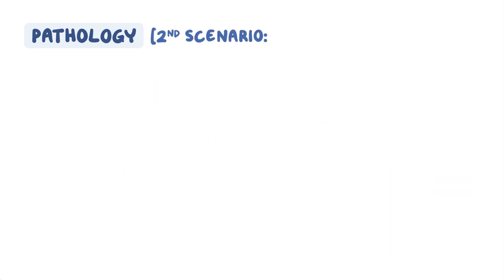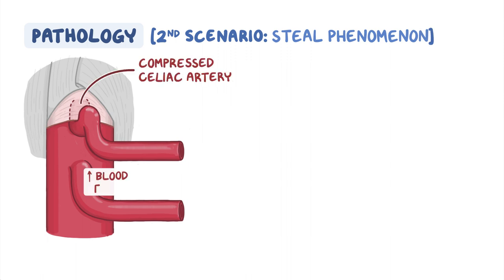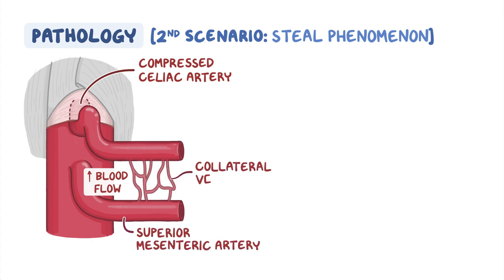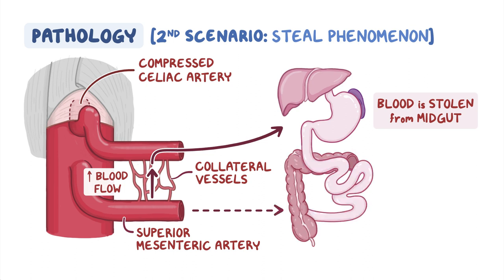The second scenario is called the steal phenomenon, where the celiac artery gets compressed, causing increased blood flow from a nearby artery like the superior mesenteric artery to get diverted via tiny collateral vessels to the celiac artery region. As a result, blood is stolen from the mid-gut area supplied by the superior mesenteric artery, resulting in insufficient blood flow to the bowel.